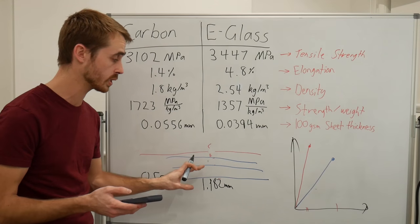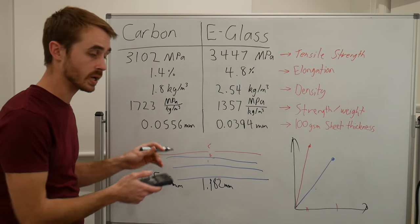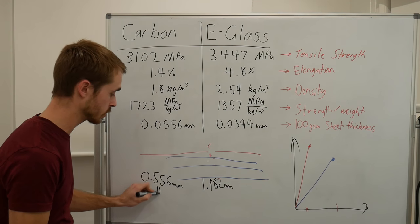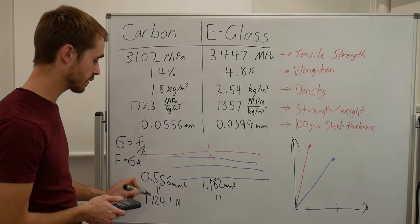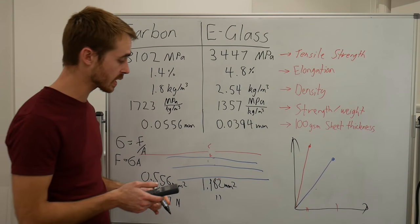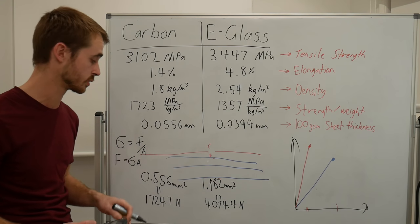This isn't including the resin, just the fiberglass itself. These will both have respective strengths. If we imagine these two laminates individually, the carbon will take a total of 1724 newtons and the fiberglass will be able to take a total of 4074.4 newtons.